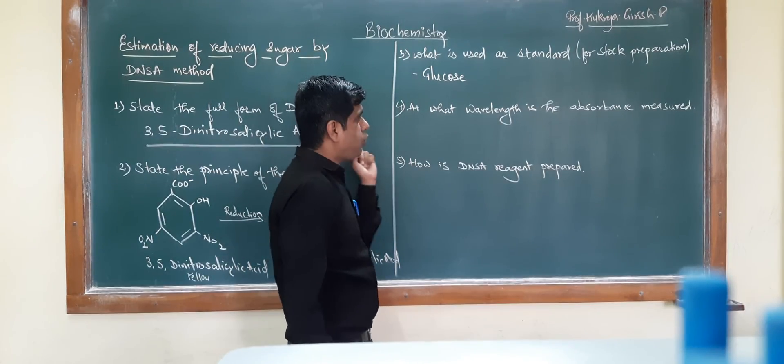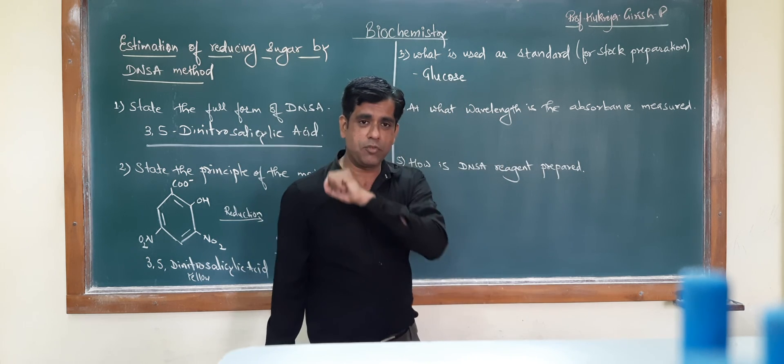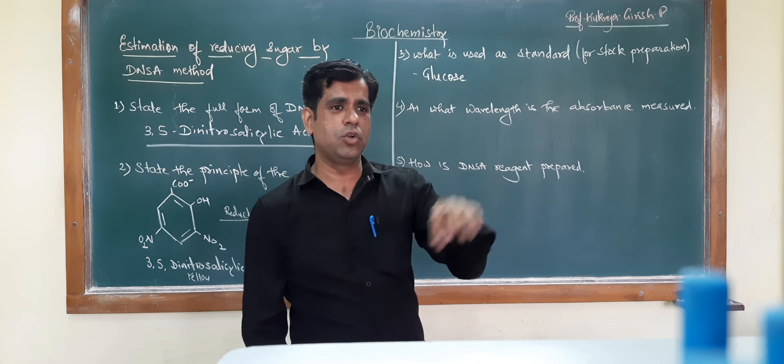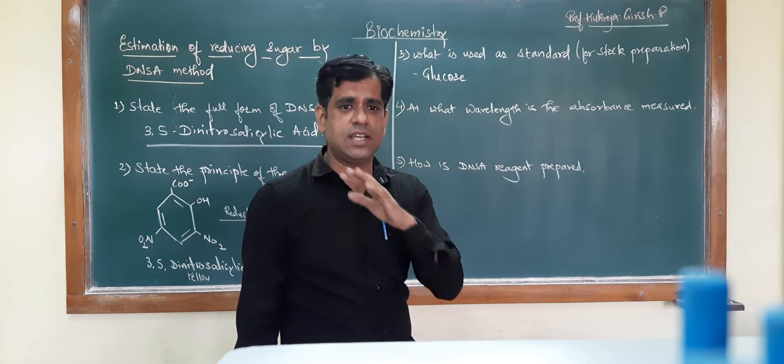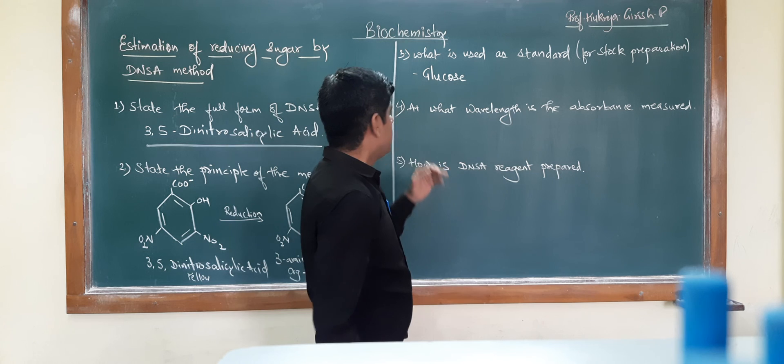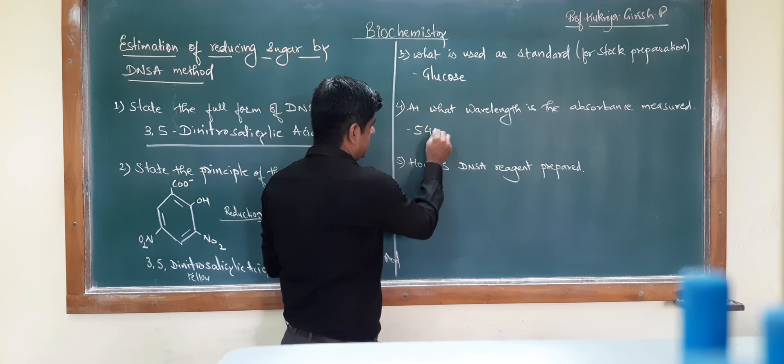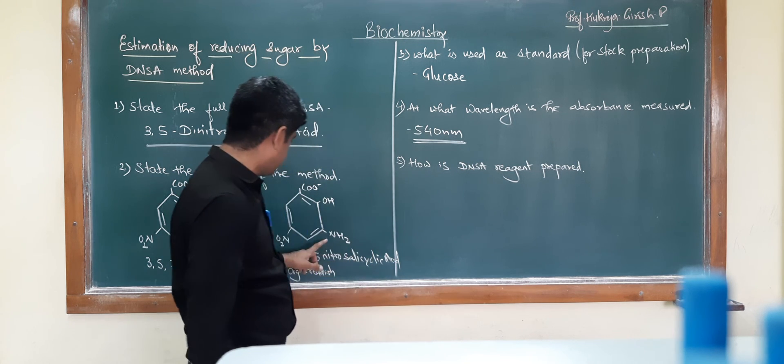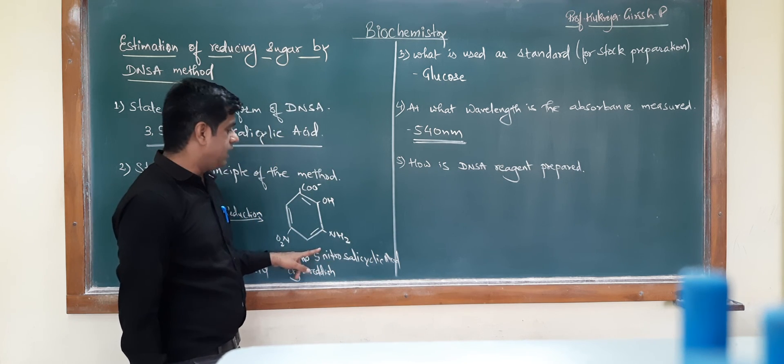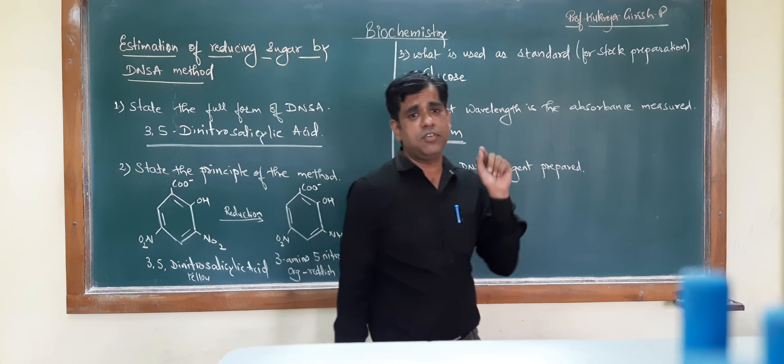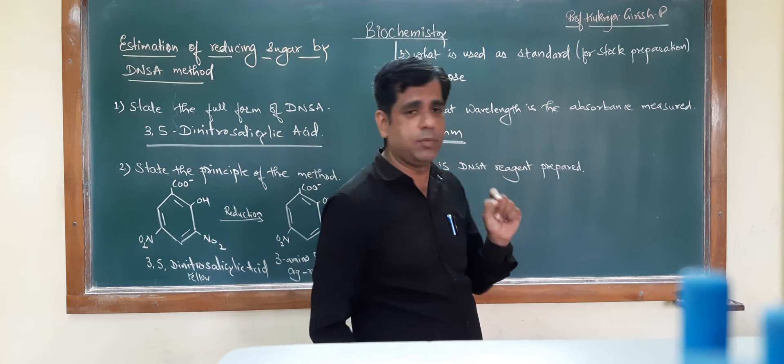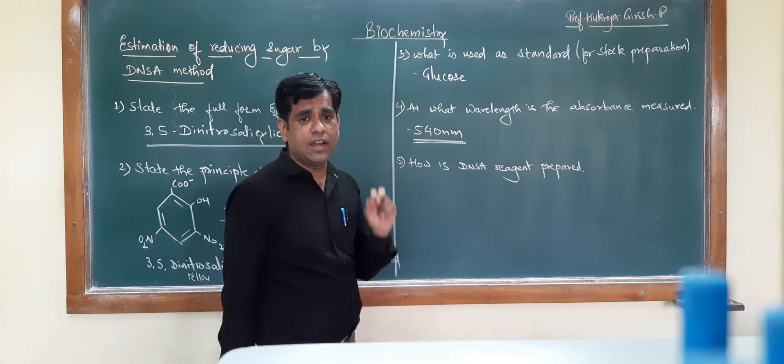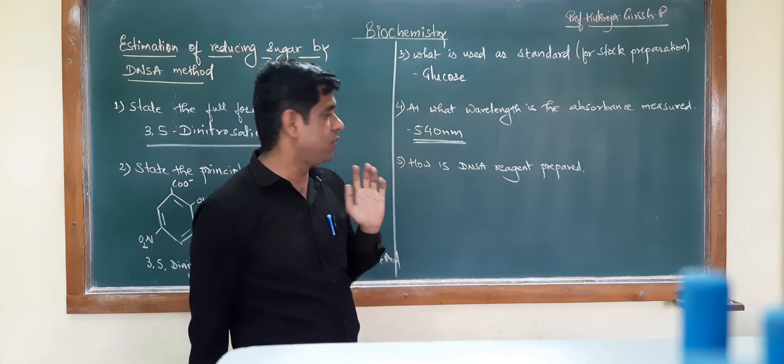The next question asks at what wavelength is the absorbance measured. After performing the entire procedure of mixing the different stocks and unknowns and addition of DNSA, boiling and incubation, at what wavelength will you measure this absorbance? It has an extinction maxima at 540 nanometers. The wavelength which you will be using for detecting the absorbance is 540 nanometers for estimation of this reducing sugar.